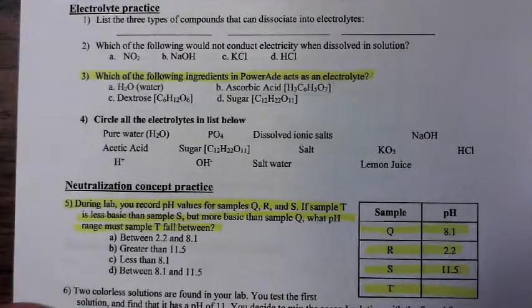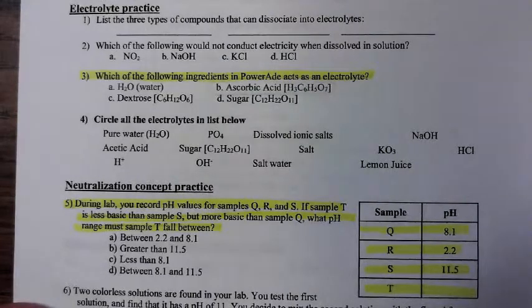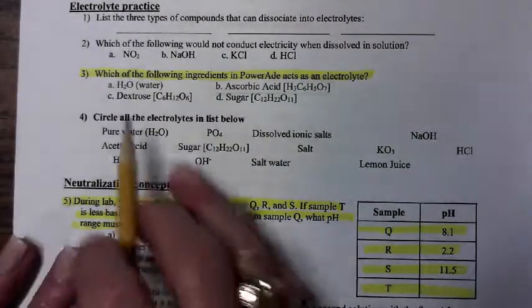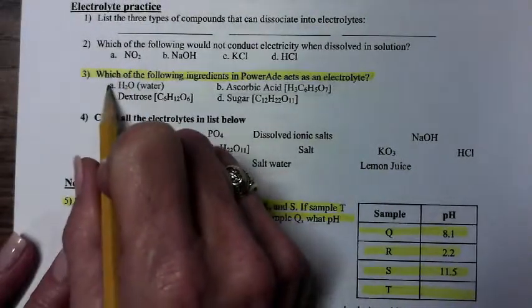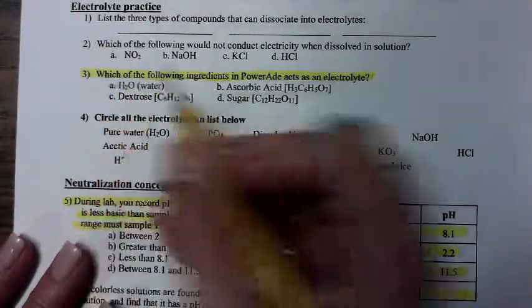So in order for something to be an electrolyte, it cannot be a covalent compound. It has to be an ionic compound that can break apart into ions. Well, water, while that's a polar substance, that's usually the solute. That's what things are dissolved in.